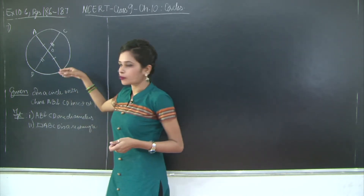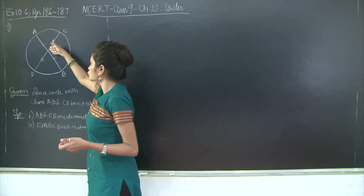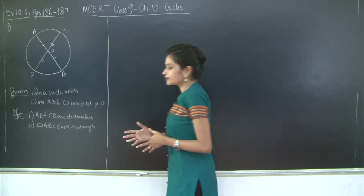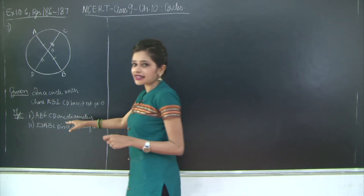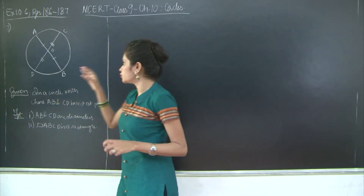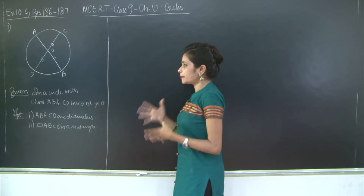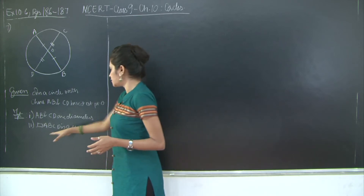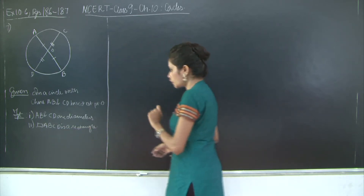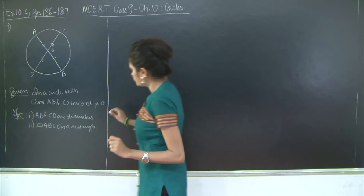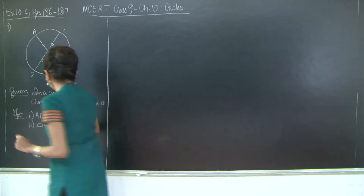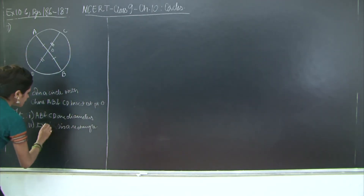Since they are bisecting at point O, AO is going to be equal to OB and CO is going to be equal to OD. I need to prove two things: first that AB and CD are the diameters, and second that ABCD is a rectangle.